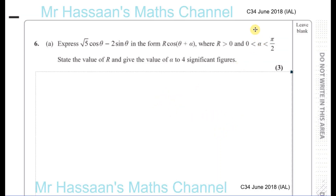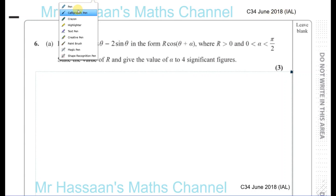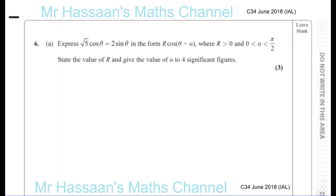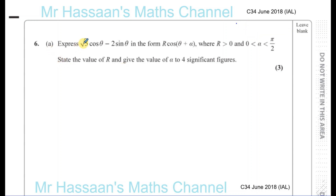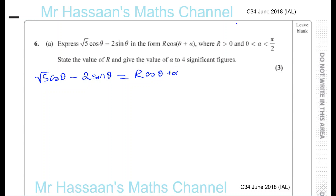Question number 6 from C34, June 2018 International A-Level paper. Here we have a question about trig identities. It says express the square root of 5 times cosine theta minus 2 sine theta in the form r cosine theta plus alpha. So we've got the square root of 5 times cosine theta minus 2 times sine theta, and we're going to express it in the form r cosine theta plus alpha.